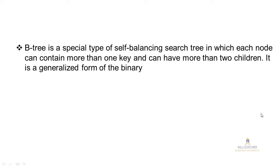Hello and welcome back to Skills Explorer, my name is Rahul. Today we're covering B-tree. So what is a B-tree? B-tree is a special type of self-balancing search tree in which each node can contain more than one key and can have more than two children. It is a generalized form of binary tree. In binary tree categories like AVL, Red-Black, each node can hold maximum two nodes, but B-tree ka advantage hai — B-tree in one node can hold more than two nodes. That's why height kam hoti hai, and searching operation bhi kaafi fast hota hai.